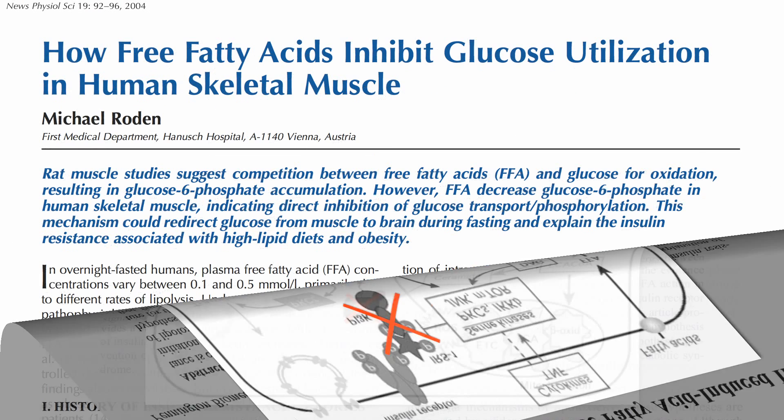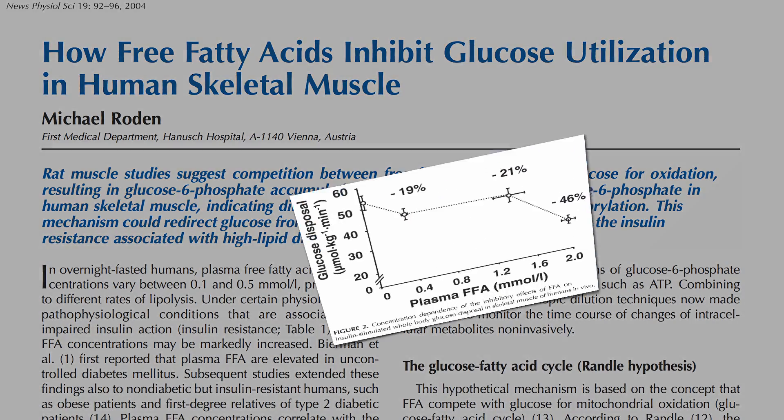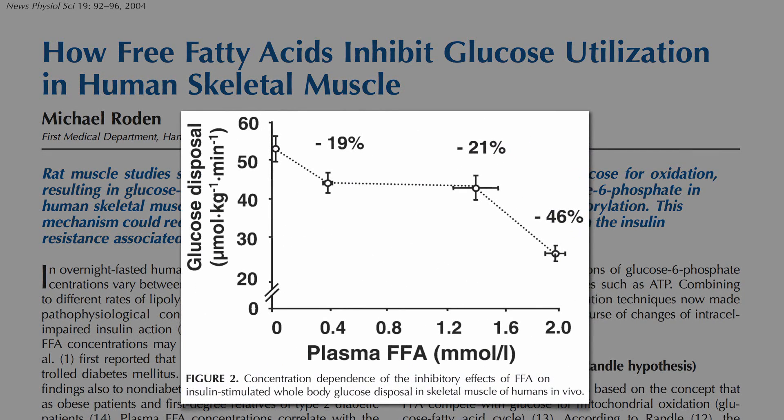As the level of fat in the blood rises, the body's ability to clear sugar from our blood drops. Where is this fat in our blood that's wreaking all this havoc coming from? It comes from the fat that we eat and the fat that we wear.